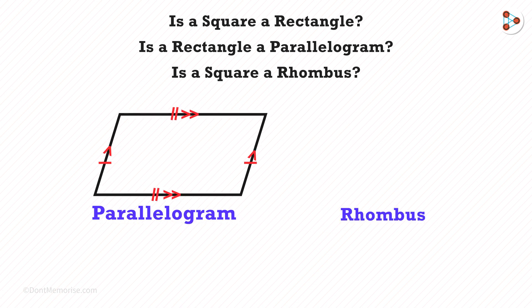What is a rhombus? A rhombus is a quadrilateral with its opposite sides parallel and all four sides equal to each other.